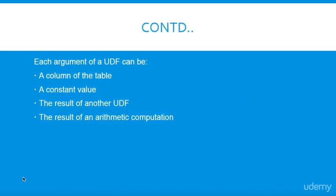Each argument of a UDF can be a column of the table, a constant value, the result of another UDF, or the result of an arithmetic computation.